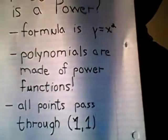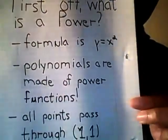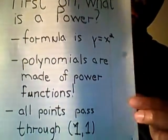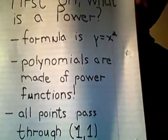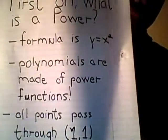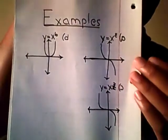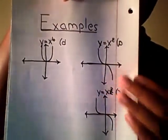And all points on a power function pass through one, one. Okay, so don't forget that. That's not that hard. Mitt Romney used to forget numbers and make up numbers, like the famous 47 percent. Okay, now let's look at some examples so you all can understand.